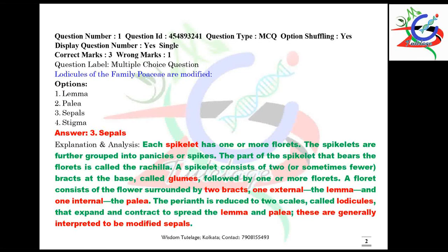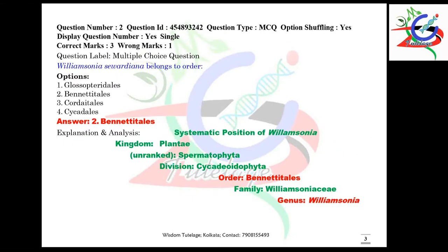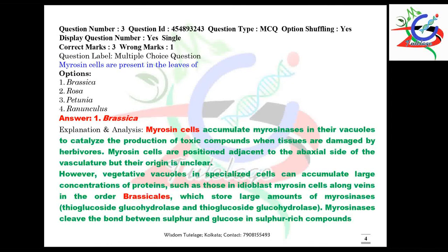In this question, lodicules are a modification of the sepals, but besides this there are other parts like lemma, palea, and blooms which are also important for your upcoming examination. Question number two: Williamsonia sewardiana belongs to which order? Williamsonia belongs to order Bennettitales. The systematic position of Williamsonia is given here.